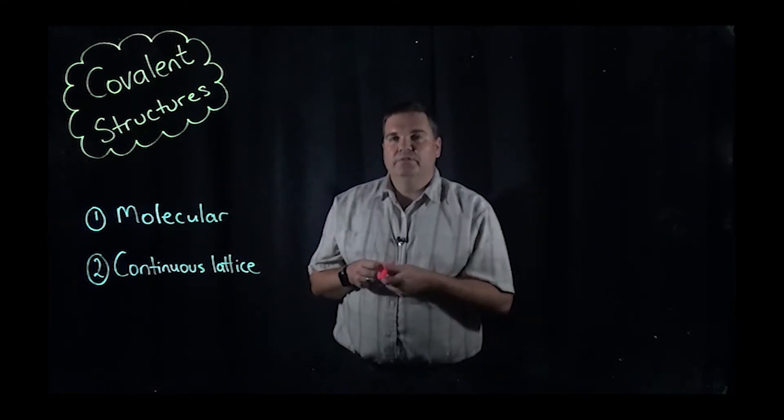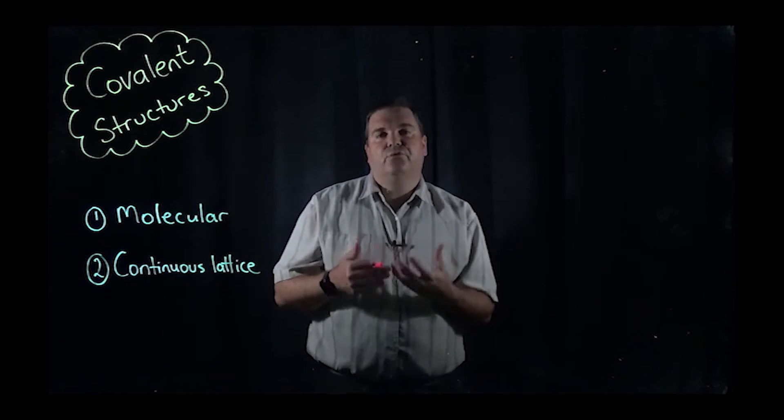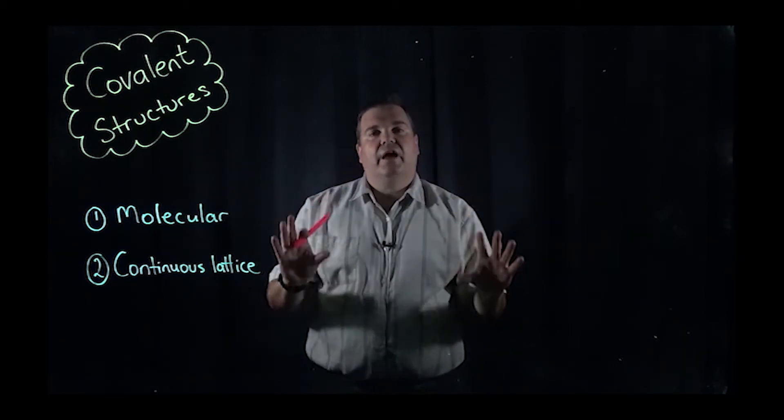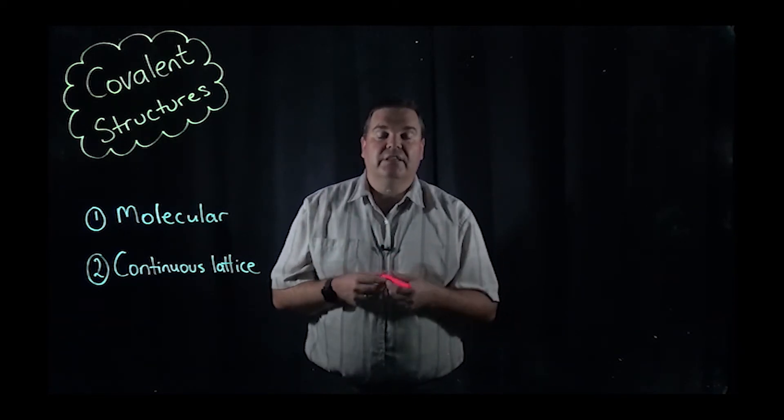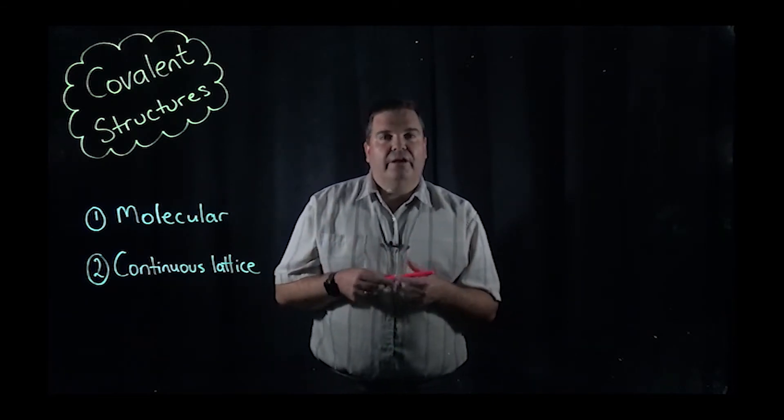When we were looking at ionic bonds in that video, I talked about the fact that ionic substances exist as three-dimensional ionic lattices, and what that means is there was a big network of atoms that link together, resulting in them having very high melting points. Covalent substances operate a little bit differently.